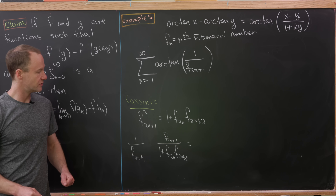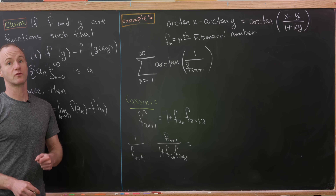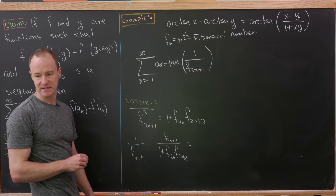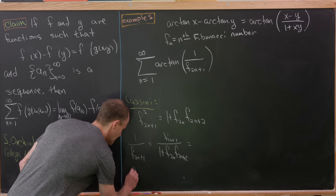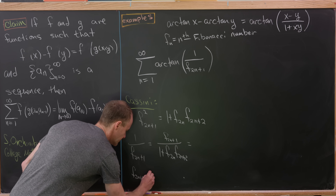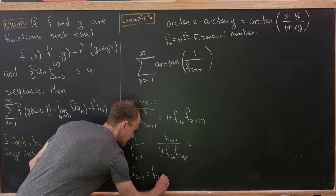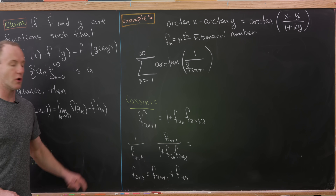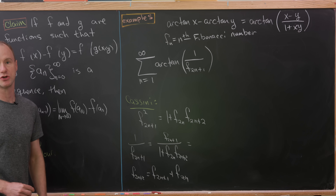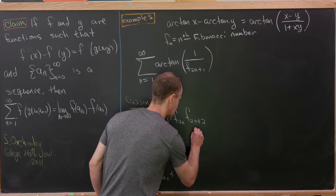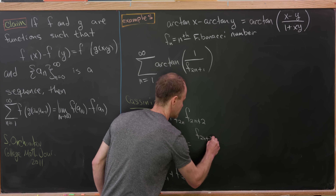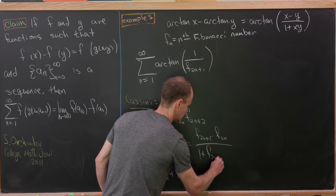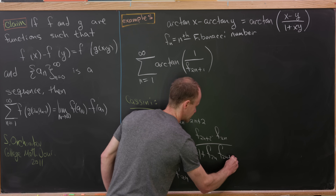Using the Fibonacci recursion identity, f sub 2n+2 equals f sub 2n+1 plus f sub 2n, and solving for f sub 2n+1, we get f sub 2n+2 minus f sub 2n. So we end up with 1 over f sub 2n+1 equal to (f sub 2n+2 minus f sub 2n) over (1 plus f sub 2n times f sub 2n+2).